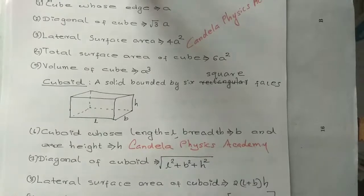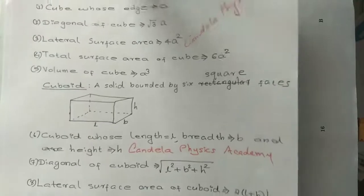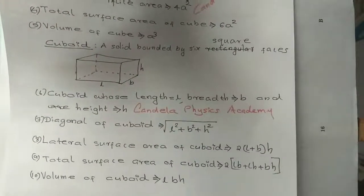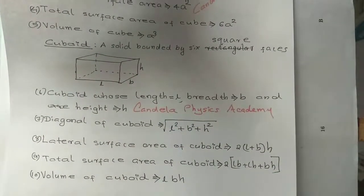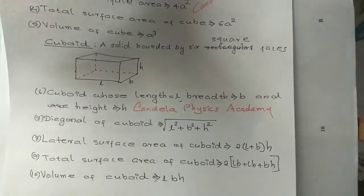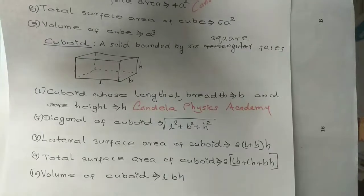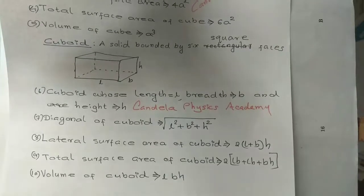The solid is bounded by 6 square faces. The length is 1, the breadth is 1, the height is 1.